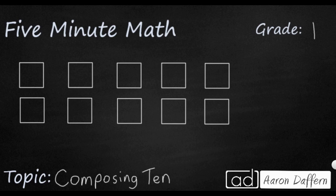We are going to spend five minutes today talking about the number 10, because the number 10 is extremely important. We use the number 10 for our place value system. Every time we get 10 of one place value, we go to the next place value. So 10 ones make a 10, 10 tens make a hundred, 10 hundreds make a thousand, and so on and so forth. So we need to get really good with coming up with 10 in our brain.